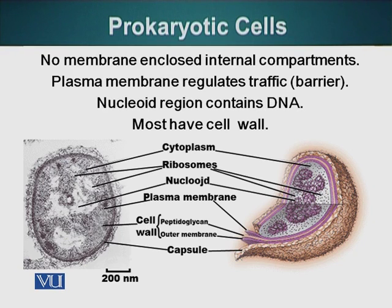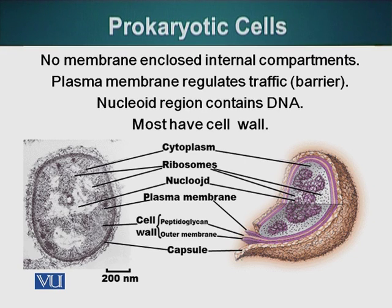Their DNA is present in a specific region generally called the nucleoid region. The genetic material or DNA is surrounded by the cytoplasm, which contains particulate matter such as ribosomes suspended within it. These cells have a plasma membrane, which is a selective barrier allowing the cell to import certain things and export waste material. These cells also have a cell wall, which is important for maintaining the shape of the cell.